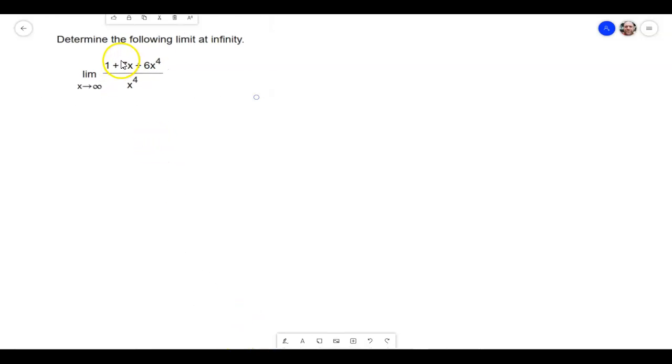Hey everybody, this is Mr. Beckstrom, and today I want to take a look at an example from section 2.5. This is limits at infinity, and we're going to take a look at how we find the limit of a rational function when we let x approach infinity or negative infinity.